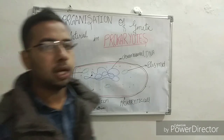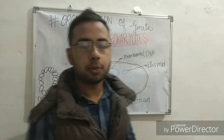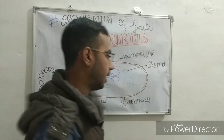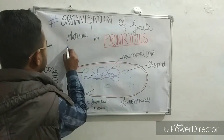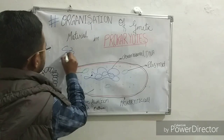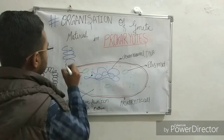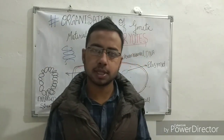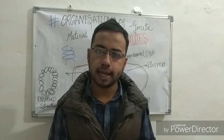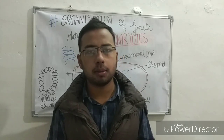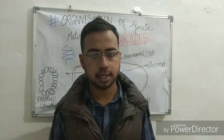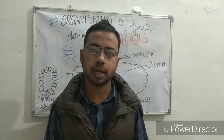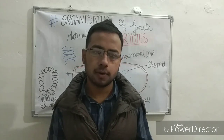In prokaryotes, plectonemic supercoiling is present. This supercoiling occurs because the DNA is cyclic and only a small amount of genetic material is present in the organism.